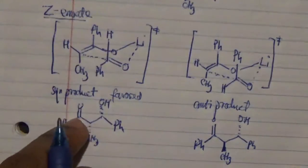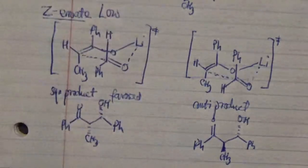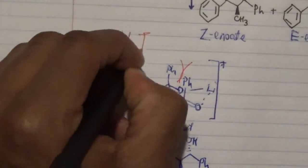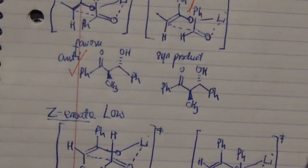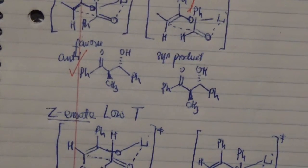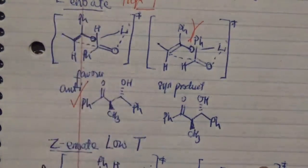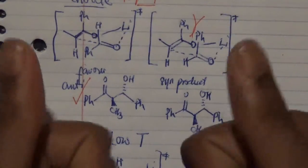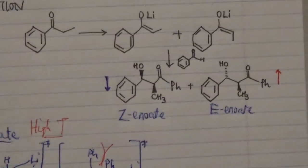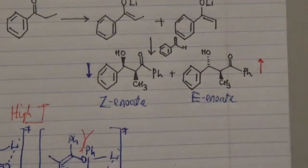So, the syn (cis) product is formed from the Z-enolate at low temperatures, while the anti-product is formed from the E-enolate at high temperatures. That covers the transition states for the Zimmermann-Traxler reaction — which ones are favored versus unfavored at lower versus higher temperatures. Thanks for watching this review of the enolate transition states. Please don't forget to hit the like button, share, and subscribe. Have a good day, peace!